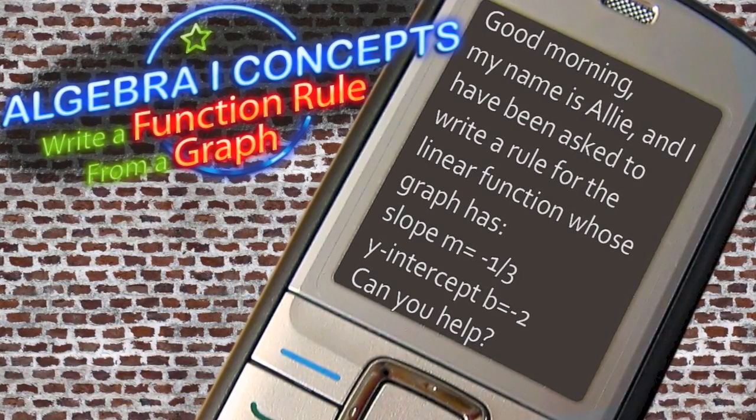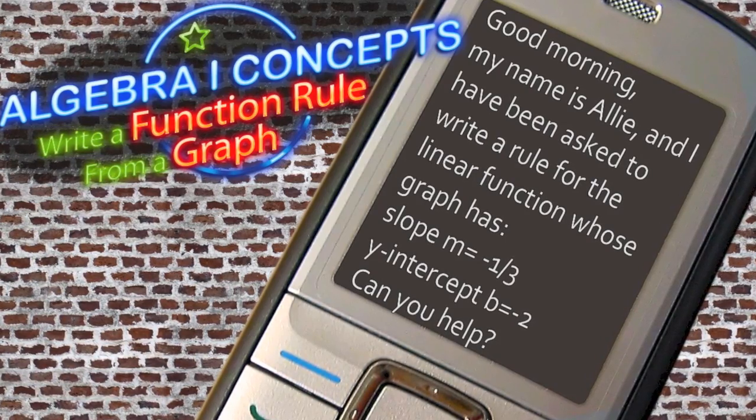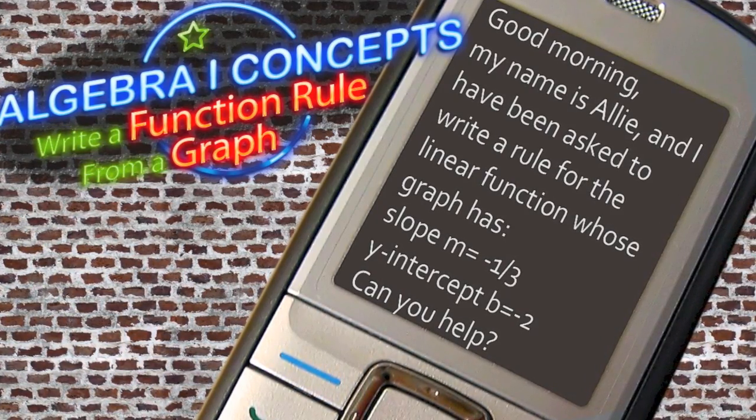Allie would like some help writing a rule for a linear function whose graph has a slope of negative one-third and a y-intercept of negative two.